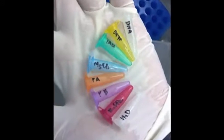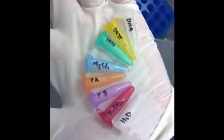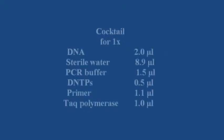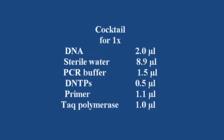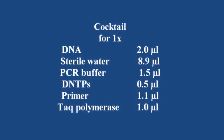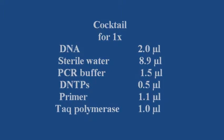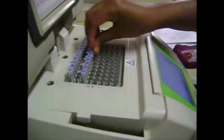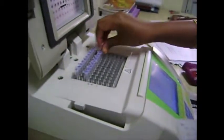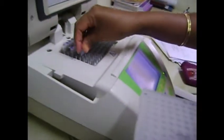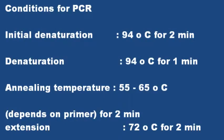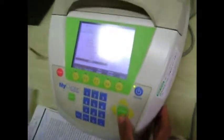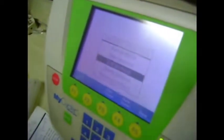Next is DNA amplification with polymerase chain reaction (PCR). These are the materials required for PCR. The PCR cocktail for 1× has a total reaction volume of 15 µl. PCR tubes are placed inside the PCR machine and the PCR conditions for maize were set up, then the PCR machine is run.